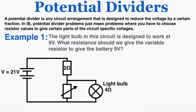I'm going to do an example problem with that variable resistor. The light bulb in the circuit is designed to work at 9 volts. What resistance should we give the variable resistor to give the light bulb 9 volts? We've got a total voltage of 21 volts and we want the light bulb to have 9 volts, so we need to figure out exactly how much resistance in that variable resistor will achieve that.